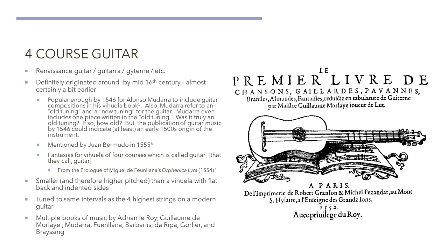20 years? 40 years? It's conjecture, but if we assume that the old tuning required some period of time to become old, then the guitar could have originated around 1500. The guitar is also mentioned by Juan Bermundo in 1555 and discussed in a comment in the prologue of Fueniana's Orfinica Alera in 1554. There's a quote in the prologue that says, "Fantasias for viola of four courses, which is called guitar."